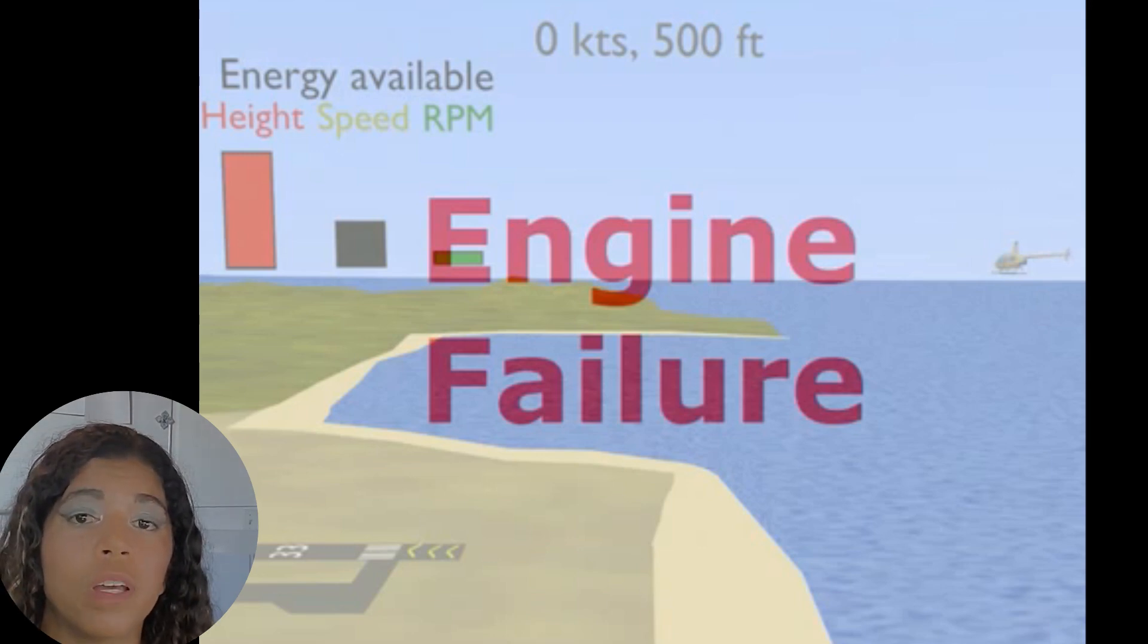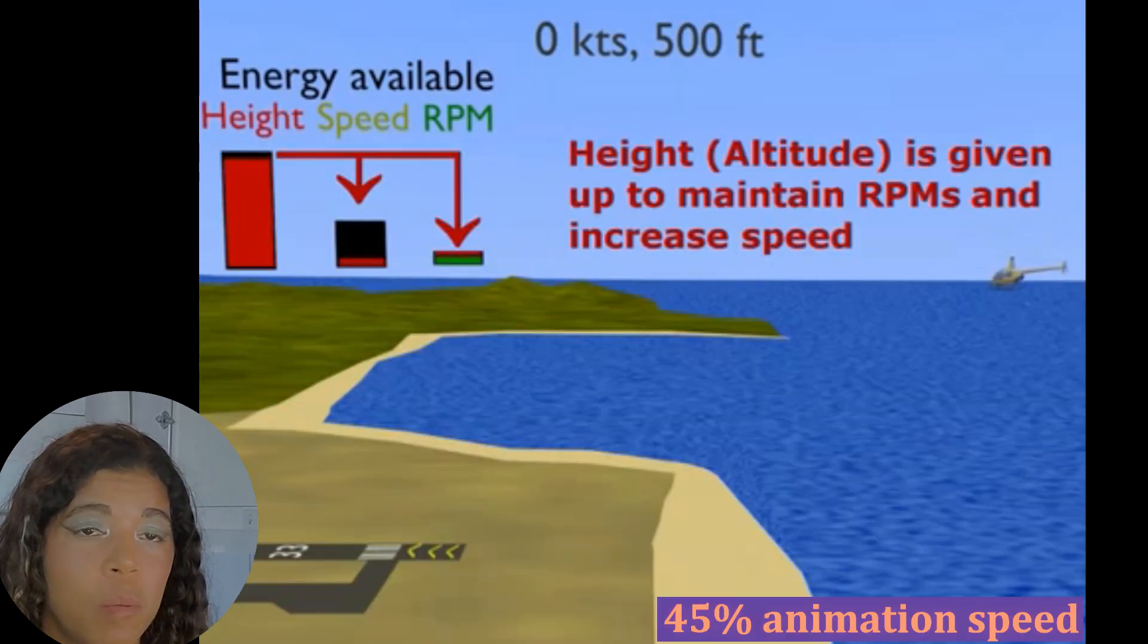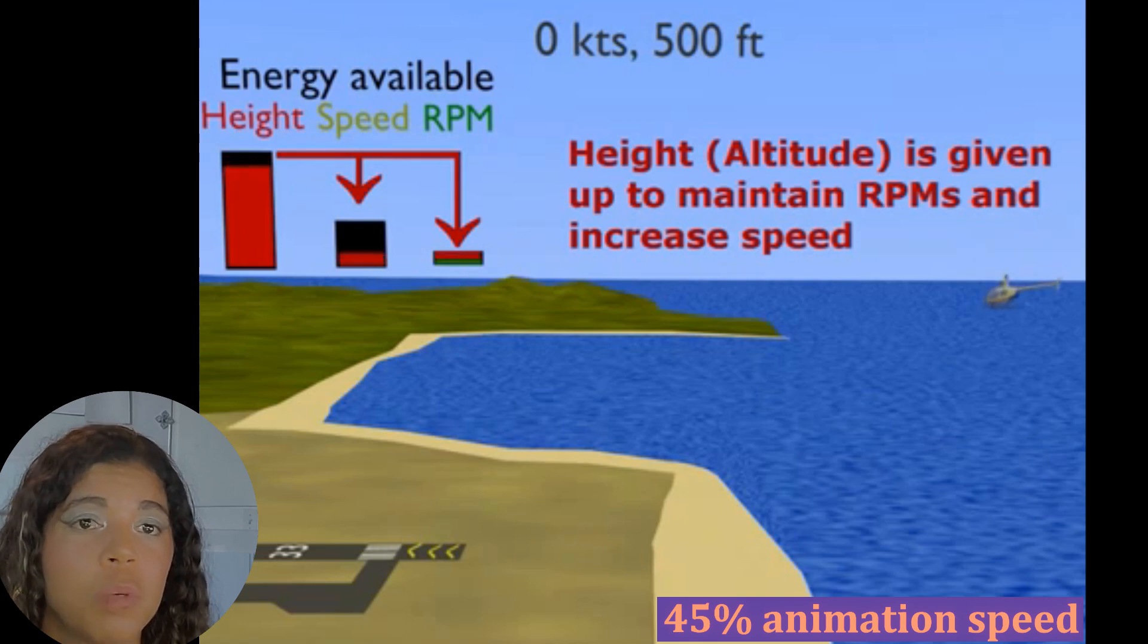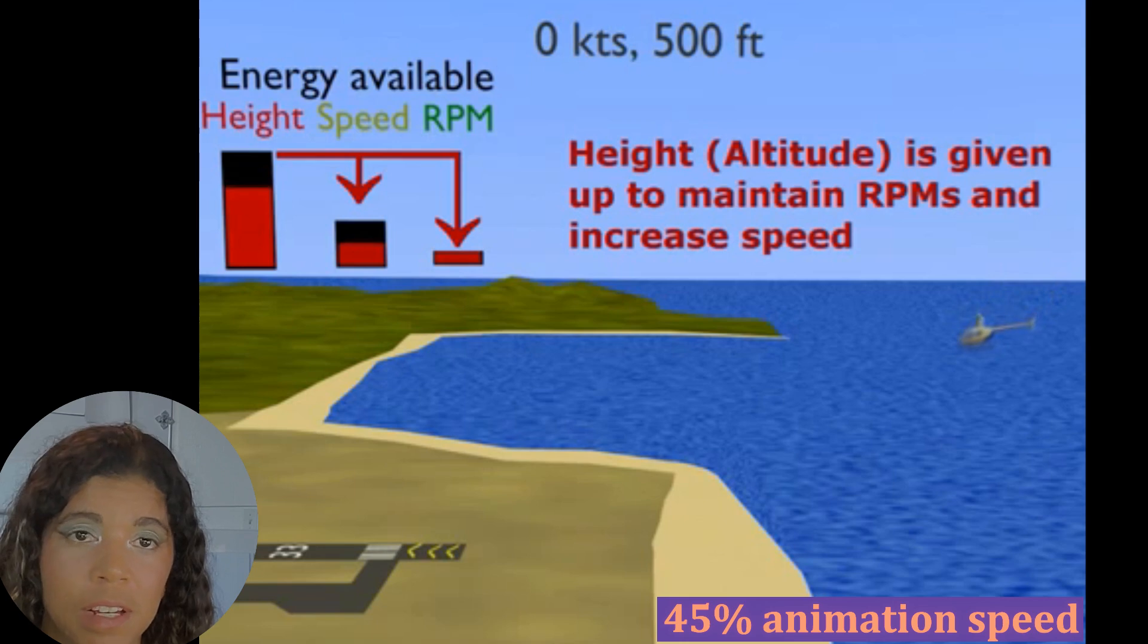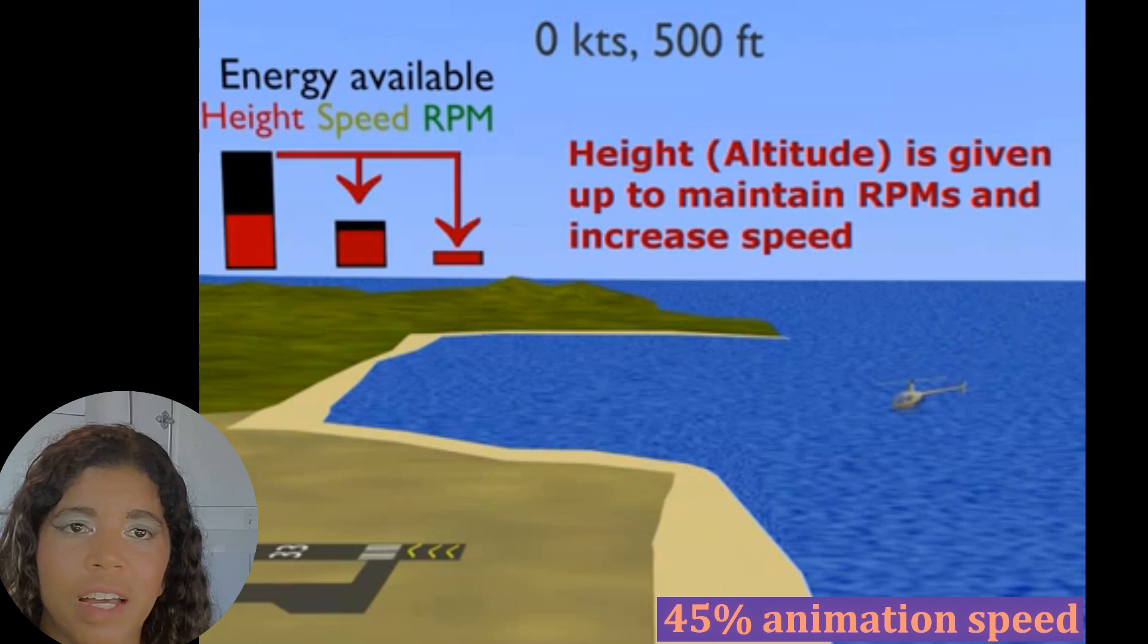So what we're going to do in this case is we're going to gradually speed up. Now because we started with no energy due to speed, this energy is going to have to come from somewhere. So the energy from the height bucket is going to be given to both the speed and the RPM bucket so that we can maintain our RPMs but also pick up some speed. As you can see here, height is both giving us speed and RPMs.